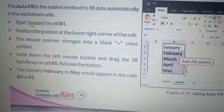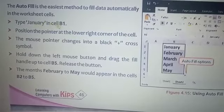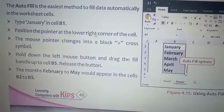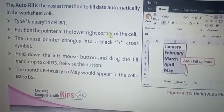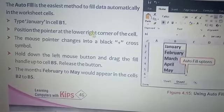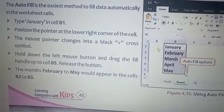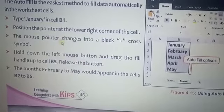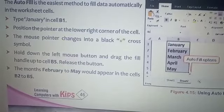How is it possible? In this example, you type January in cell B1, then move the mouse to the lower right corner of that cell. The pointer will change into a plus cross symbol.